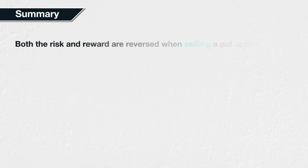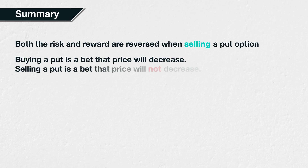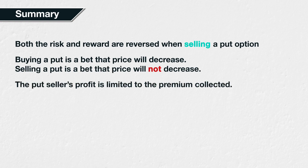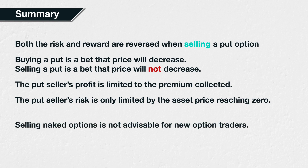In summary, selling a put option is the complete opposite of buying a put option — both the risk and reward are reversed. Any profit for the seller is a loss for the buyer, and vice versa. Buying a put is a bet that the underlying price will decrease, and selling a put therefore is a bet that the underlying price will not decrease, or at least not decrease beyond the strike price. The seller of a put option has a limited profit potential; their maximum profit is the premium they collected for the put. The seller also has a risk only limited by the asset reaching a price of zero, meaning they could lose far more than they initially collected if the price decreases significantly. As they have undefined risk, they will also need to be aware of the margin system of the site they are using. When you're brand new to options, it's best to wait until you're confident you have sufficient knowledge of the risks before selling naked options.